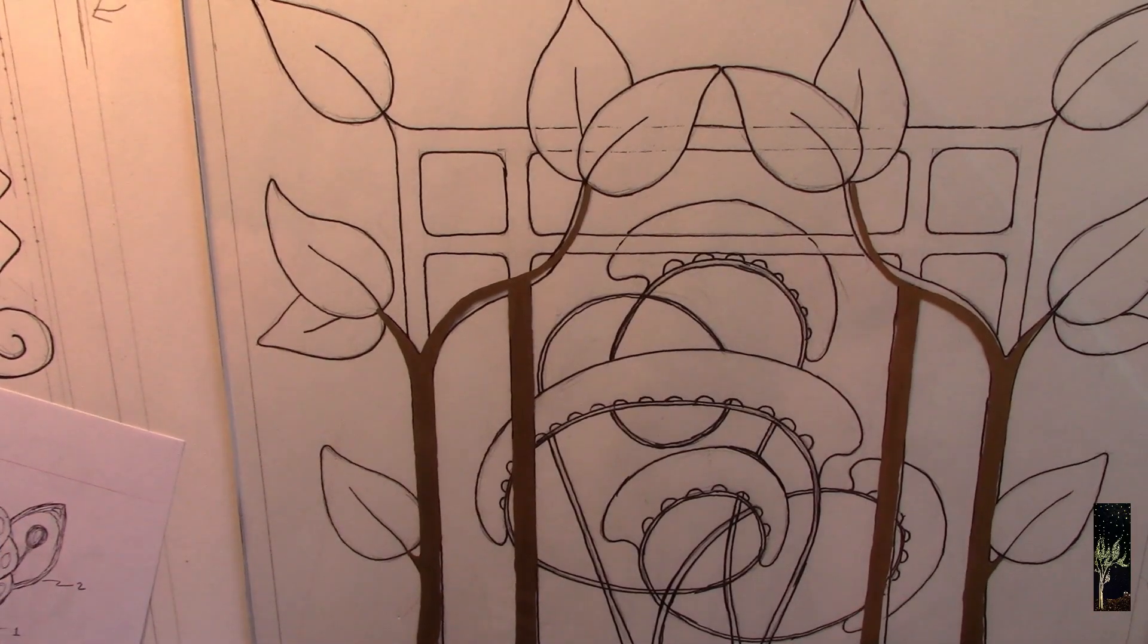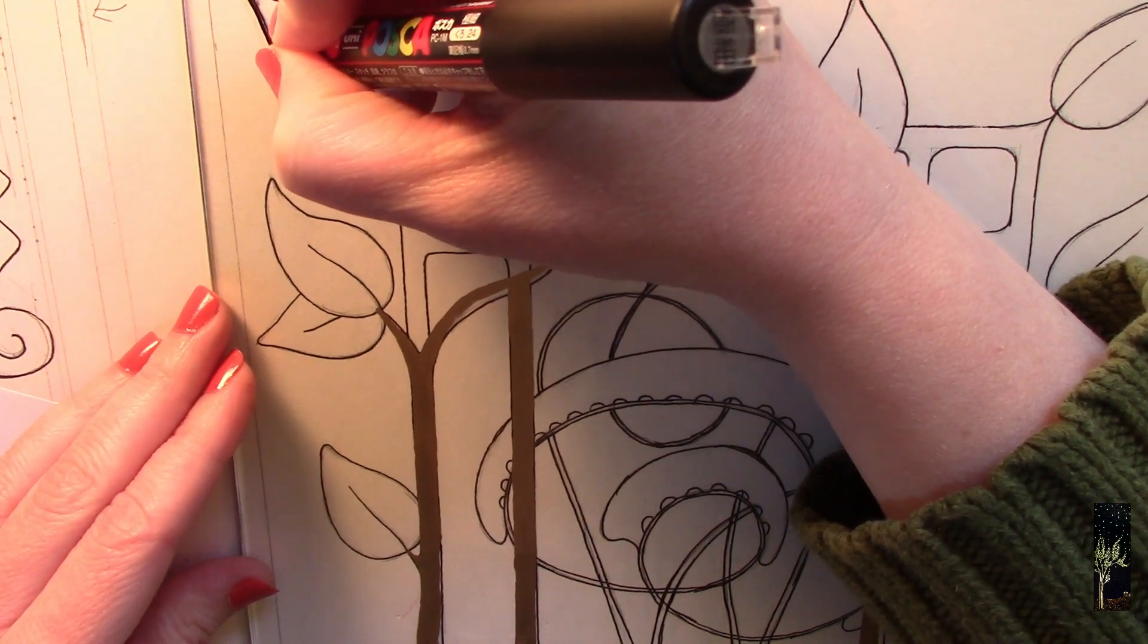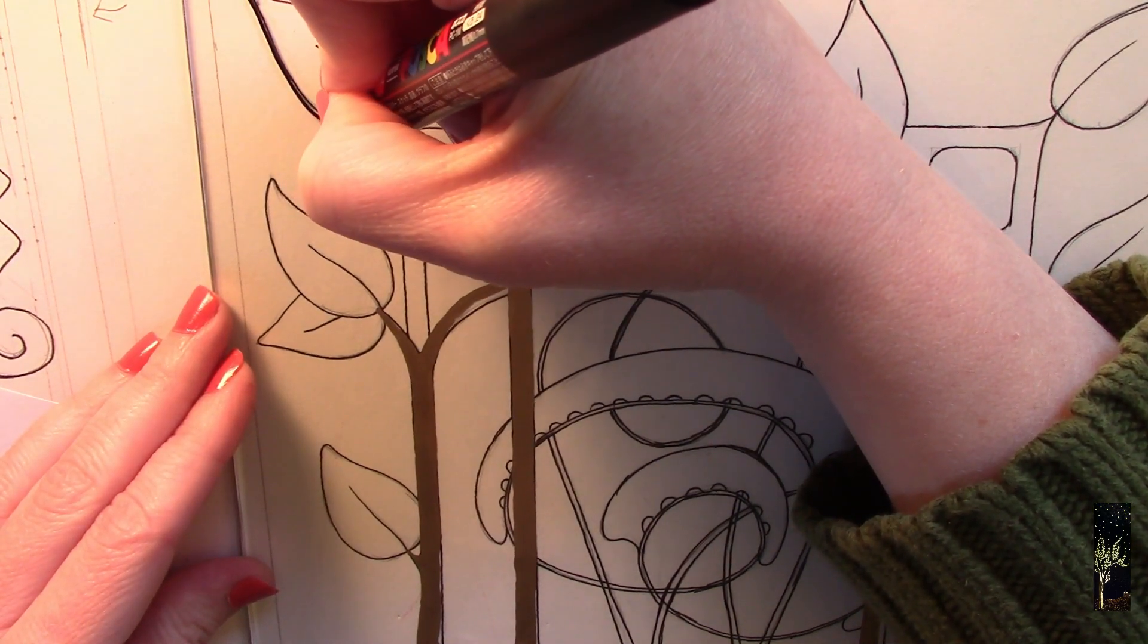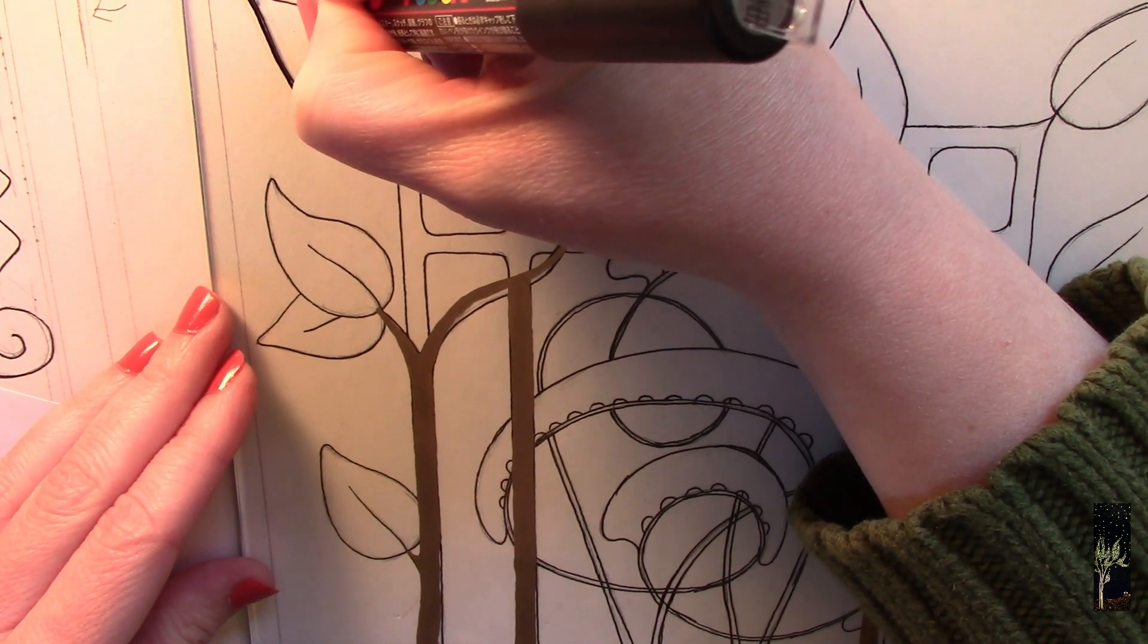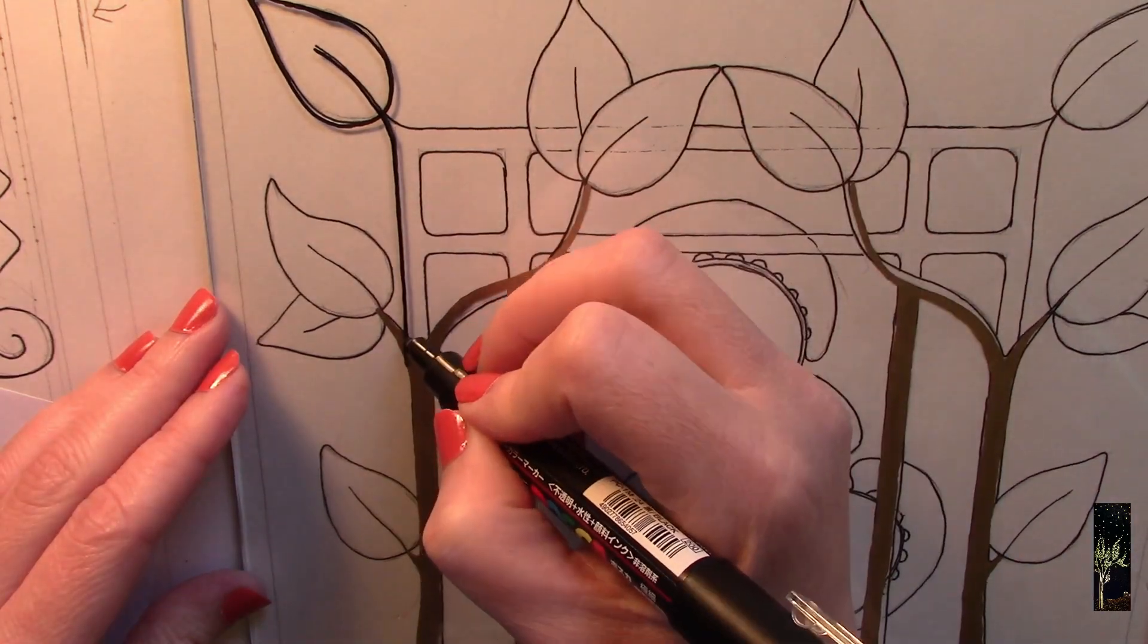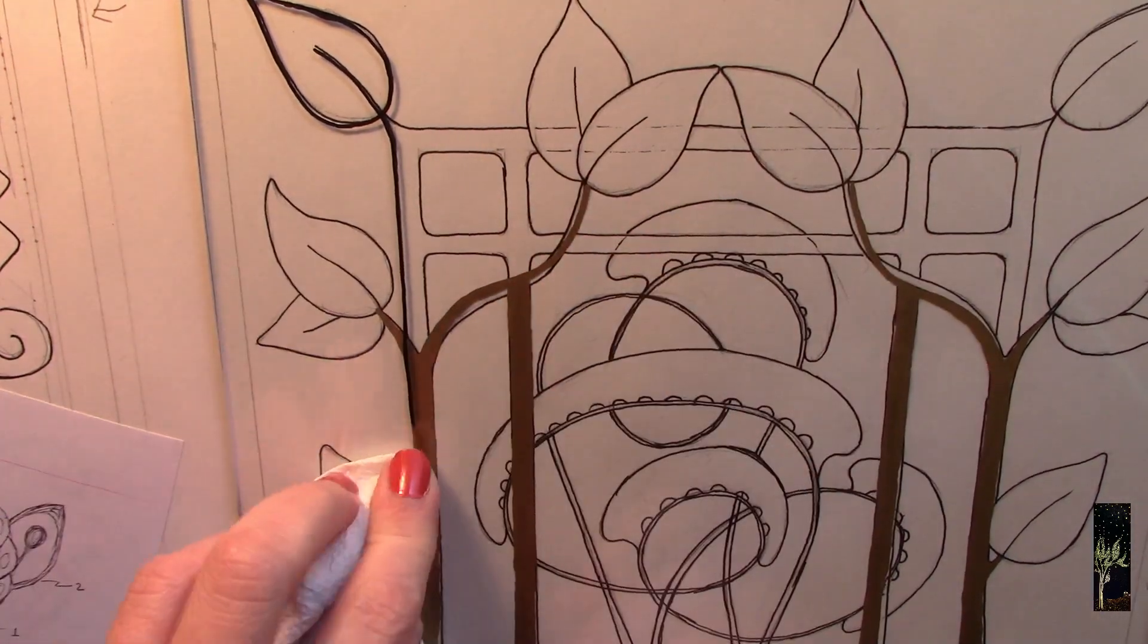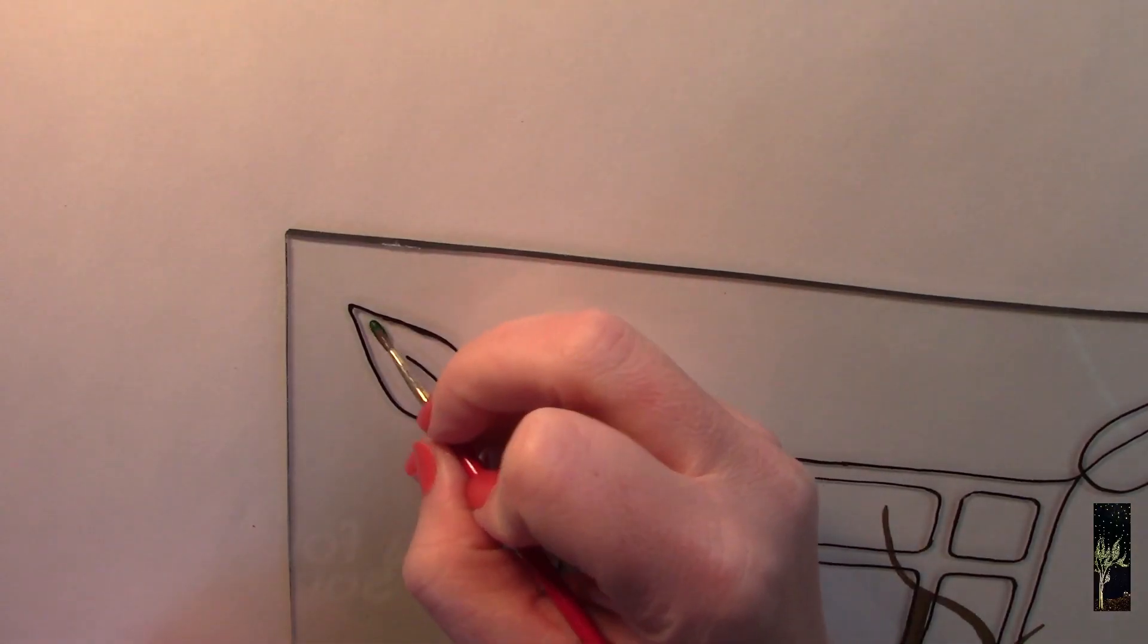All right so now I am reverse painting. I'm on the back of the first pane of glass so I'm going to do the black outline of the second layer. Now I'm starting to do the reverse painting on the back of the first pane of glass.